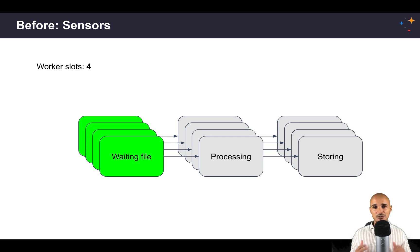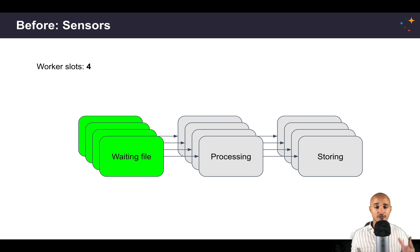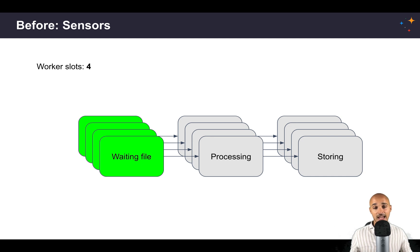With sensors we have two different modes: POC and Reschedule. The Reschedule mode is used to avoid the issue of having all your worker slots reserved for sensors. But if you have hundreds of different sensors running in parallel, you will reach a certain limit, and even with Reschedule mode you won't be able to trigger any more tasks.